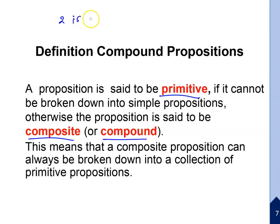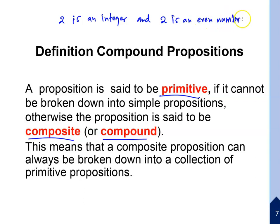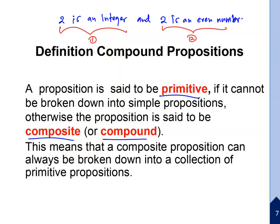For example: '2 is an integer and 2 is an even number' — this is a compound proposition. It can be broken down: '1 is an integer' and '2 is an even number' are primitive propositions. Together they form the compound proposition.